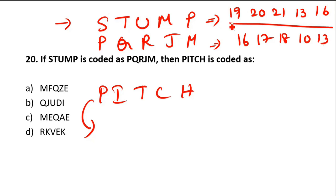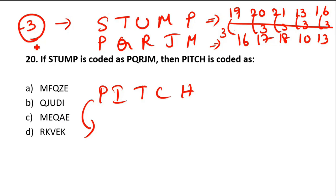Look at the difference: 19 and 16 — the difference is 3. 20 and 17 — difference is 3. Difference is 3 throughout. The logic is minus 3. You can go with respect to alphabetical order — three letters backward for each letter of the word STUMP — and you get PQRJM.